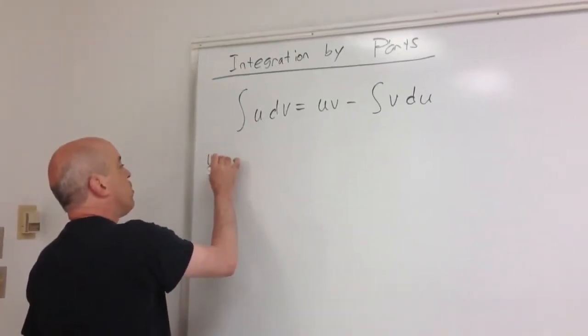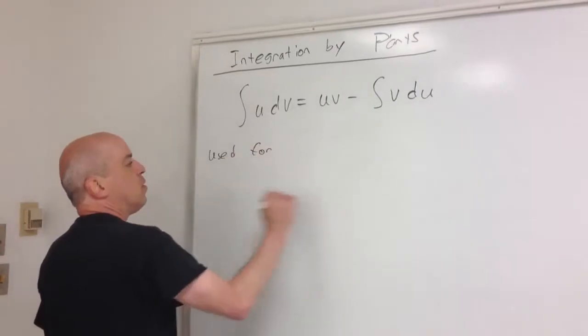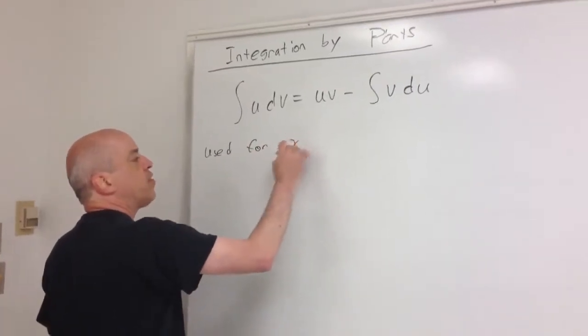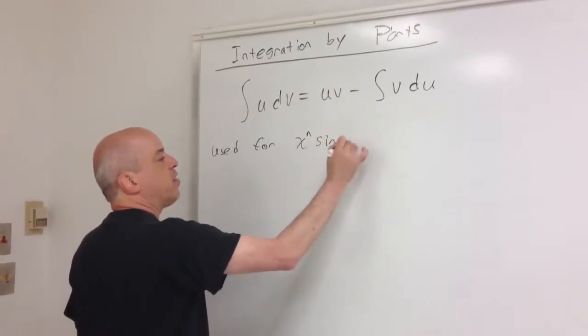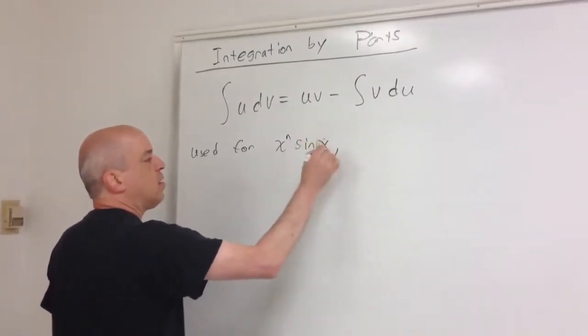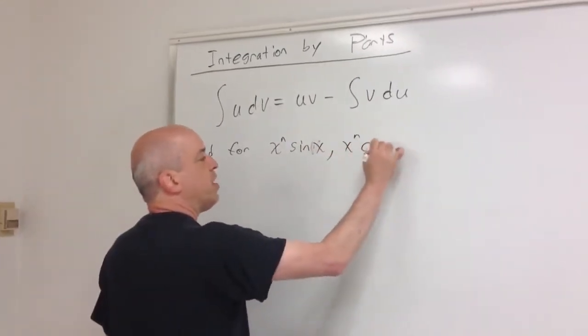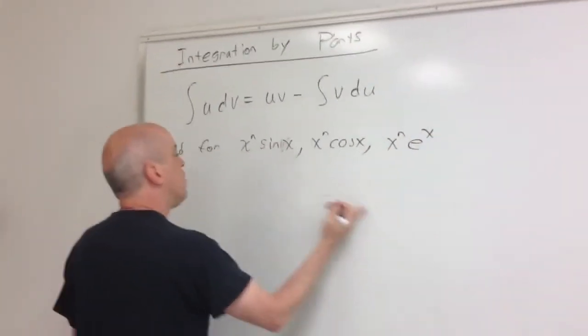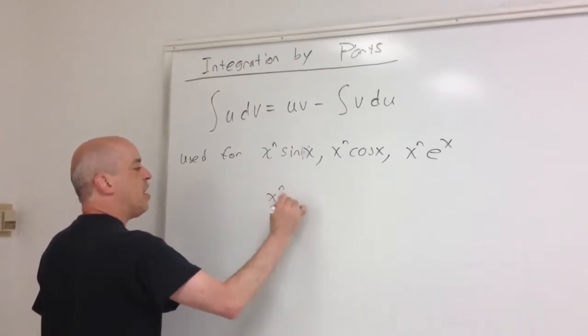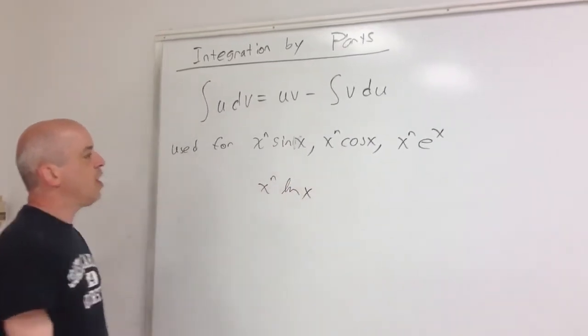So typically we use this for power of x times either sine x, power of x times cosine x, power of x times e to the x, and also power of x times natural log of x.